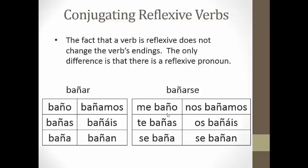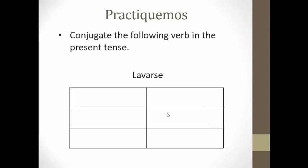Let's see if you can conjugate a reflexive verb in the present tense. On your note guide, you should have already filled out the conjugation of BAÑARSE in the present tense, and I've left you a second box to conjugate LAVARSE. Let's take a minute and conjugate that. Your answer should be: ME LAVO, TE LAVAS, SE LAVA, NOS LAVAMOS, OS LAVÁIS, y SE LAVAN.